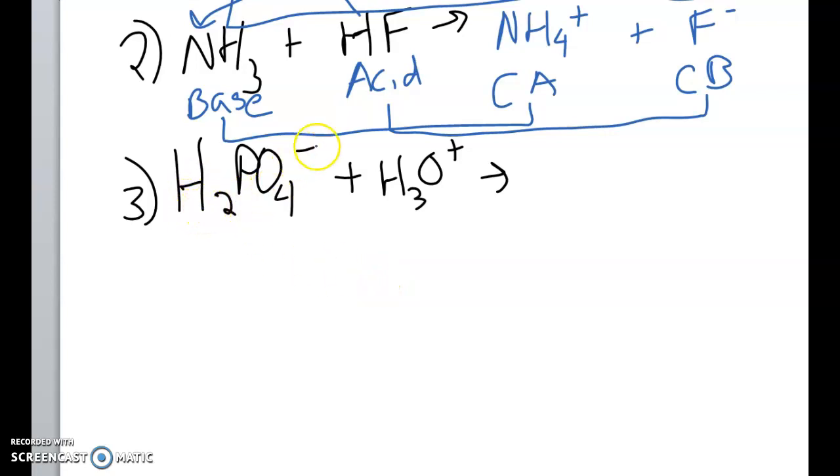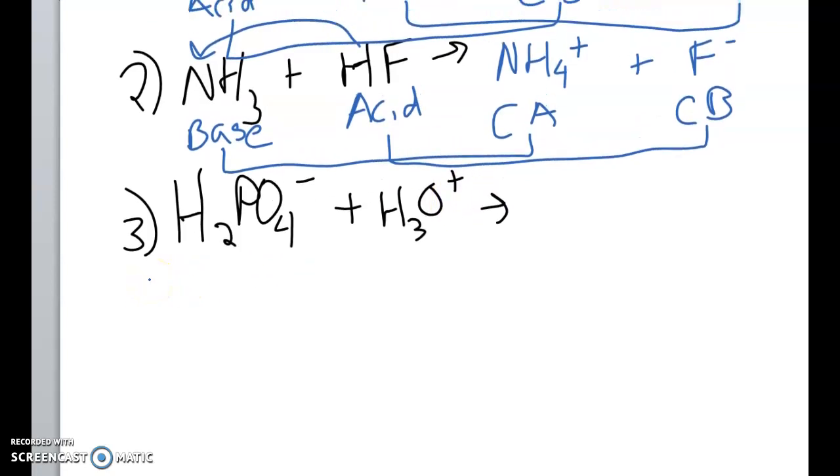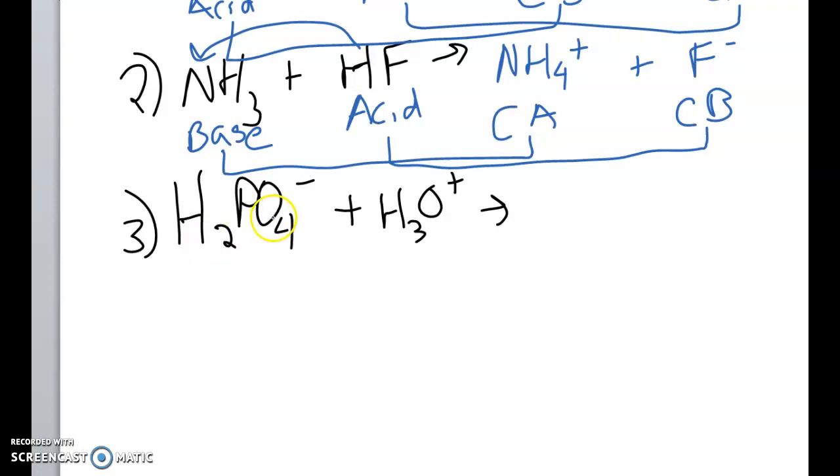So we have H2PO4 minus and H3O plus. You will see that there is no listed H2PO4 minus on your reference table, but you should still be able to state who the acid and base is because you know that H3O plus is called hydronium.